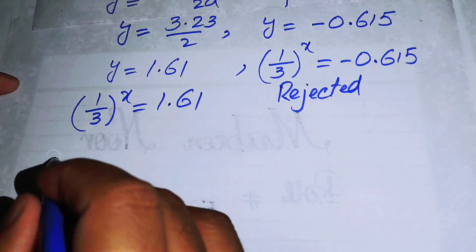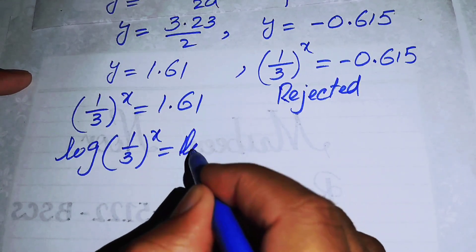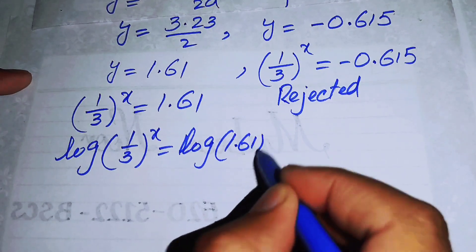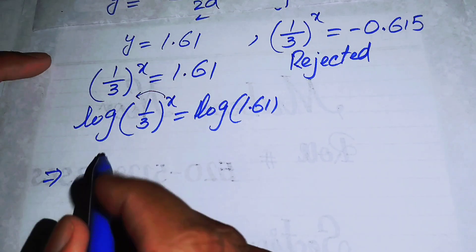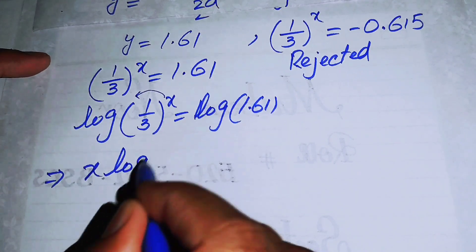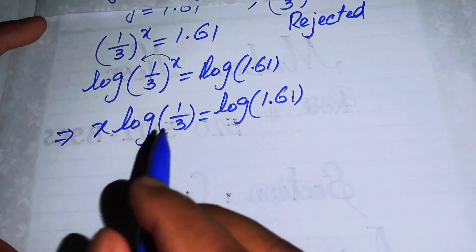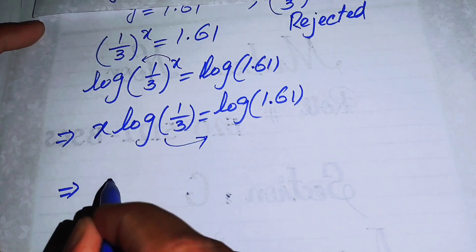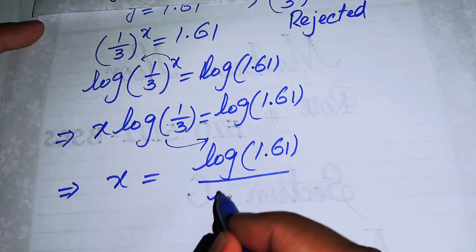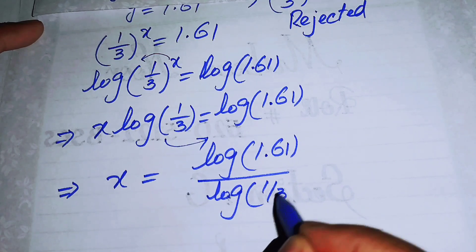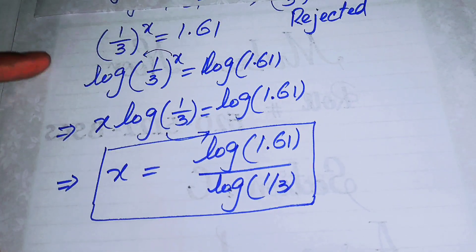To find x, we take the logarithm of both sides: log(1/3^x) = log(1.61). Applying the log power property, x times log(1/3) = log(1.61). Moving log(1/3) to the right-hand side gives the final answer: x = log(1.61) over log(1/3). Thank you so much for watching — please subscribe for more exciting videos!